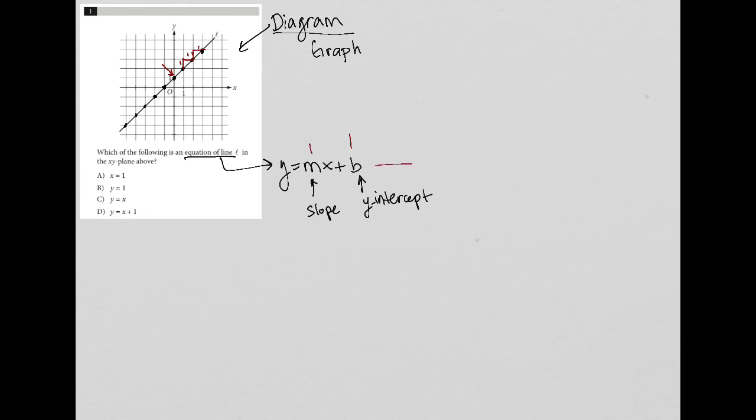So the equation that's going to come out of this is y equals - instead of mx, it's just going to be x, because I don't have to write 1x. y equals x plus, and then b, like we said, is 1. So y equals x plus 1 is the equation of this line, and therefore answer choice D is the correct answer.